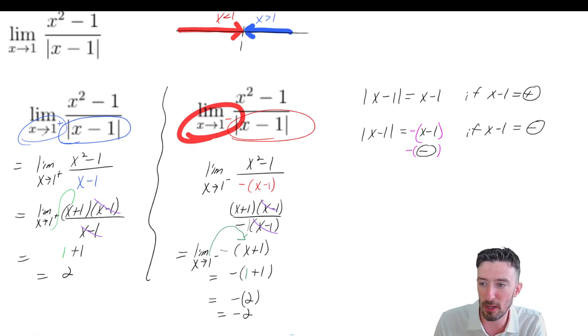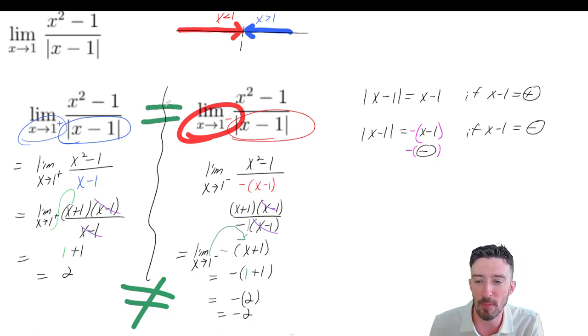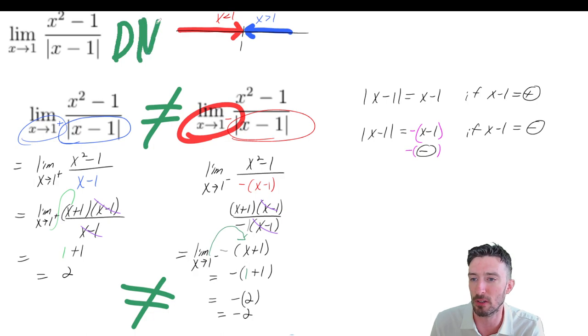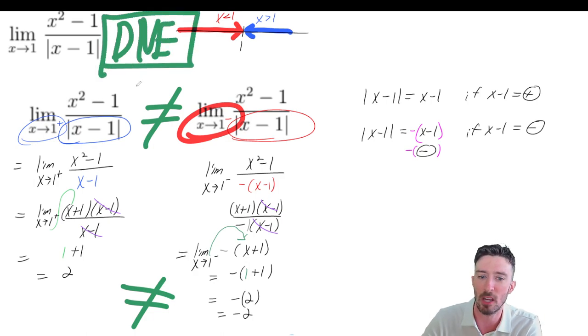Okay, so is the limit from the left equal to the limit from the right? Well, two damn sure ain't equal to negative two. So that means the answer is no, they are not equal, which means that the original limit does not exist. End of the story. Alright, there you go.